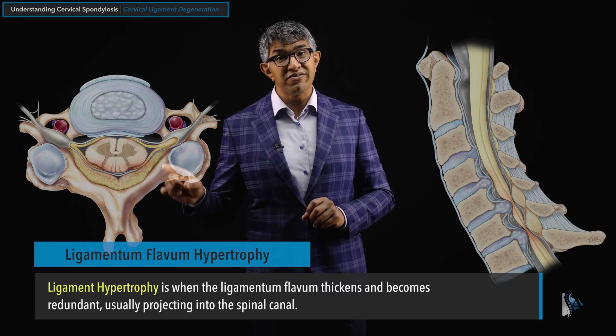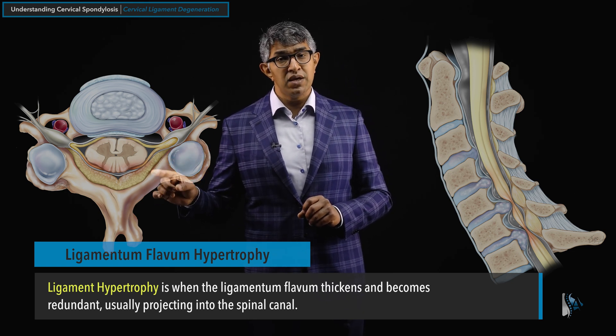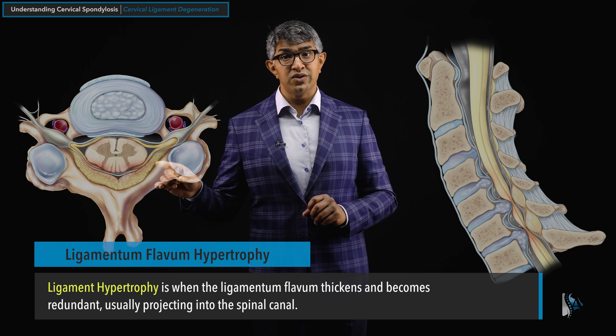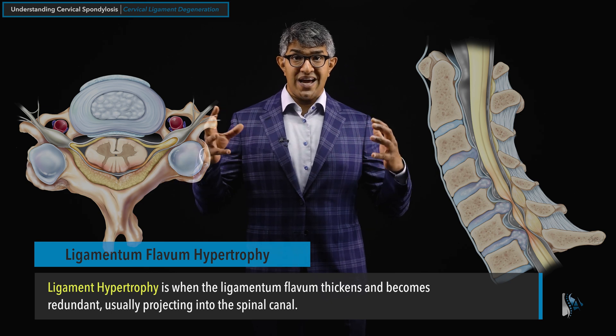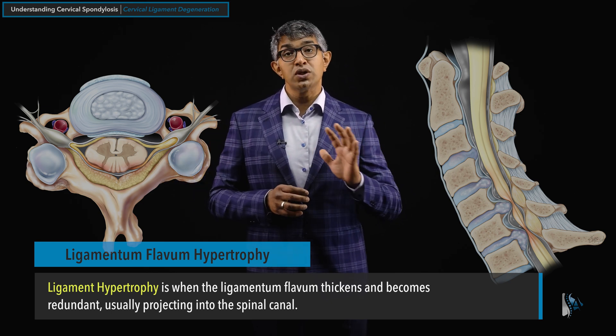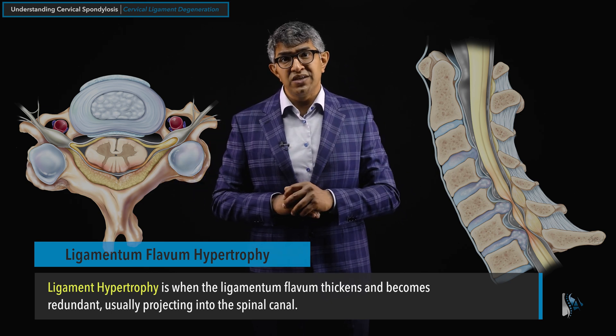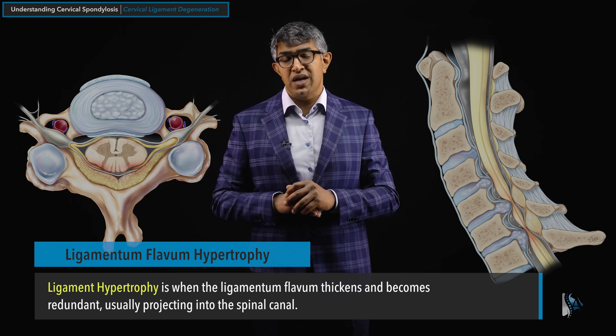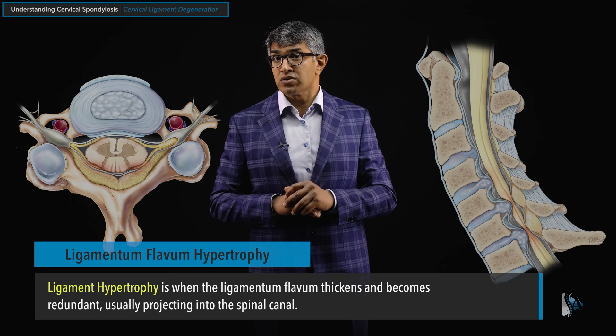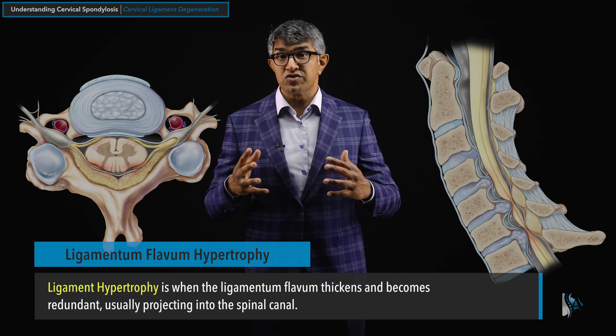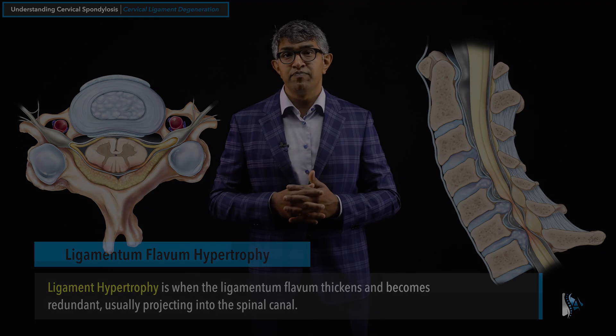Ligamentum flavum hypertrophy is when the ligamentum flavum thickens and becomes redundant — meaning there is extra tissue projecting into the spinal canal, causing pressure on the spinal cord if it gets too thick. Thank you for watching this video. I hope you found it informative. If you enjoyed it, please like and subscribe.